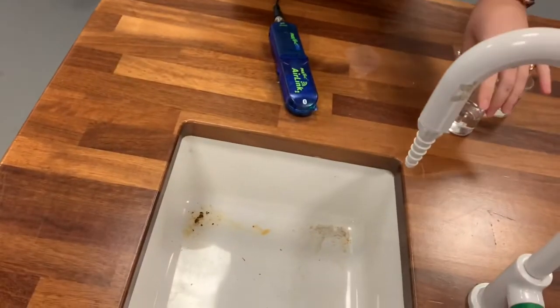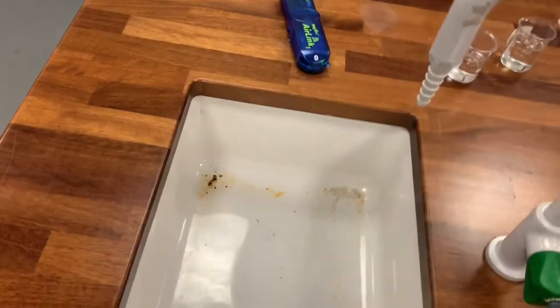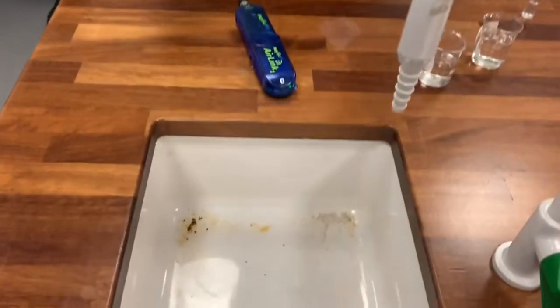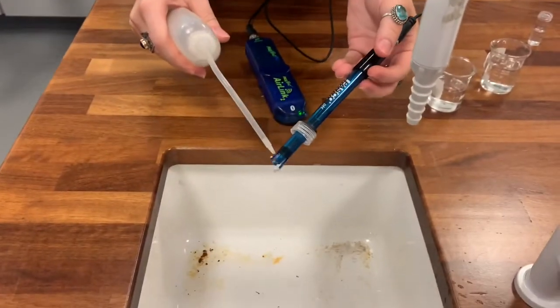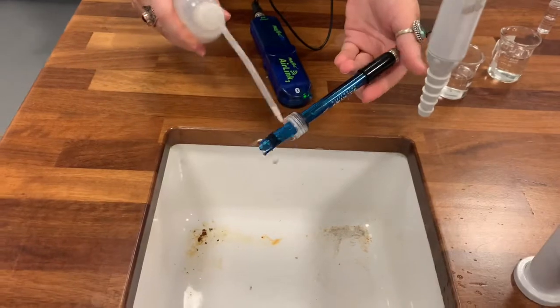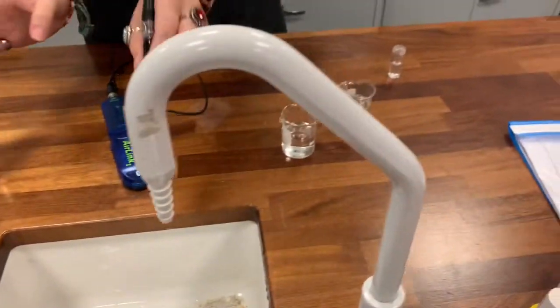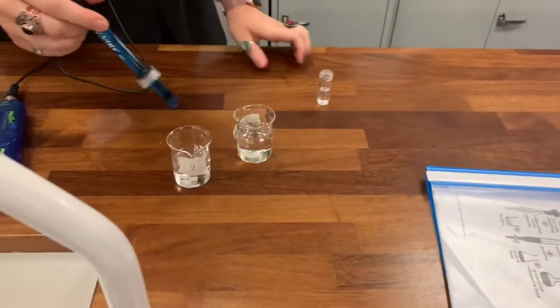So with the wash bottle we need to give the probe a rinse in the sink so all the liquid that was in it washes off. And then put it into pH 4 buffer. Which one of those beakers is your pH 4 buffer? And then give it a swirl around, keep it in there for a minute.